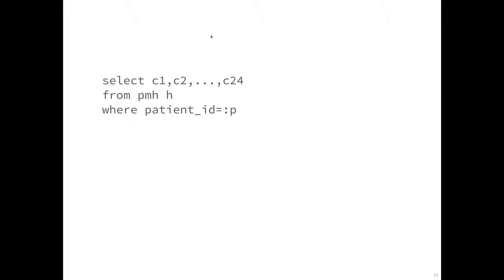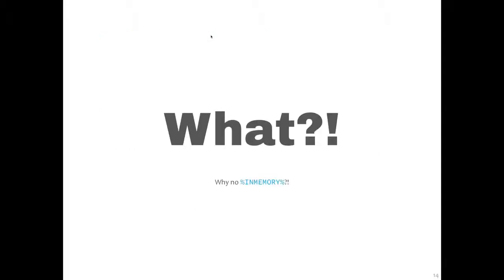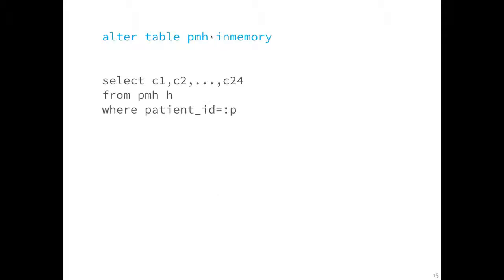The next test was the exact same query, but with the ALTER TABLE patient medical history IN MEMORY. We were shocked to find no change whatsoever — we ended up with the same index range scan, the same CBO optimizer cost of four, and the same 16.4 rows per second as before. We clearly did the alter table, ran the same query, and got the same results as before activating the feature.